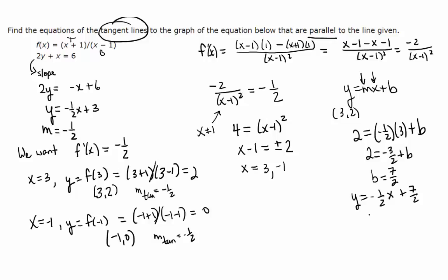That's one of them. And now let's find the one for negative 1, 0. Plugging into y equals mx plus b again. What will I write? 0 equals negative 1 half times negative 1 plus b. So that means b is negative 1 half.